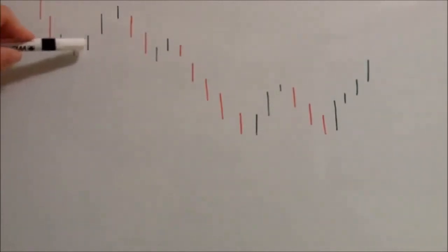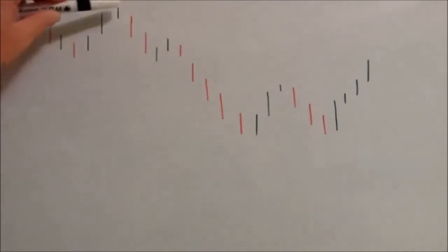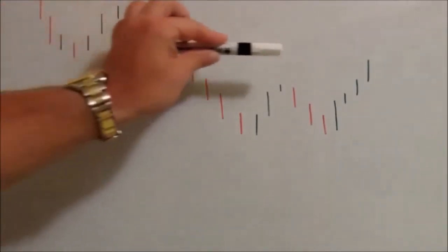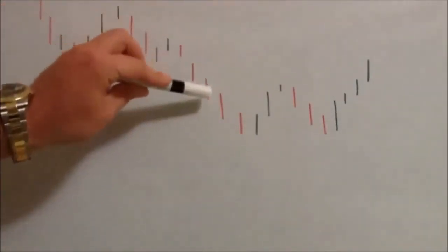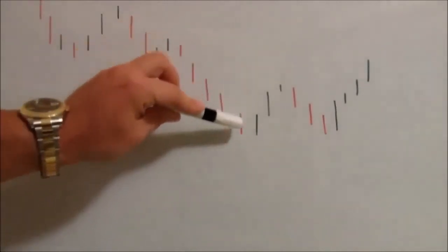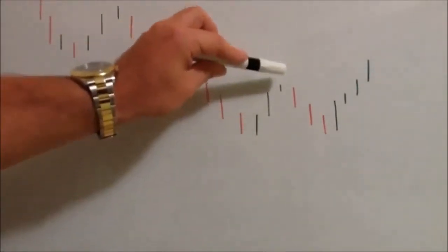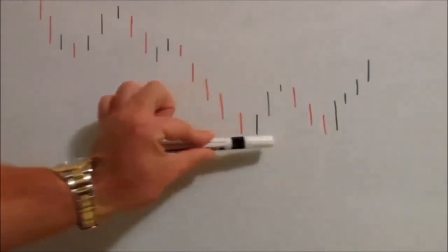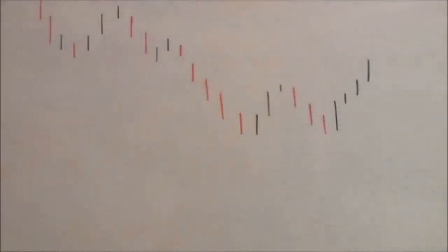What we're looking for is when the market goes down, hits a low point, and then goes higher. The low points are the ones we're interested in when drawing these lines. The market went down, hit a low point, and then bounced higher — that is where we want to be looking when drawing our horizontal buy lines.